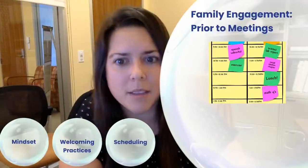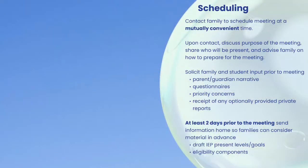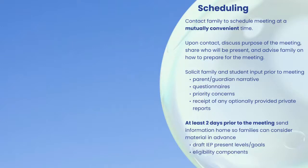What are some things you can do before meetings to foster family engagement? When scheduling meetings, contact the family to schedule at a mutually convenient time. Upon contact, discuss the purpose of the meeting, share who will be present, and advise the family on how to prepare. Be sure to solicit family and student input prior to the meeting — this might look like helping parents craft narratives, reviewing questionnaires, understanding the family's priority concerns, and obtaining any private evaluations completed so you can review them in advance.